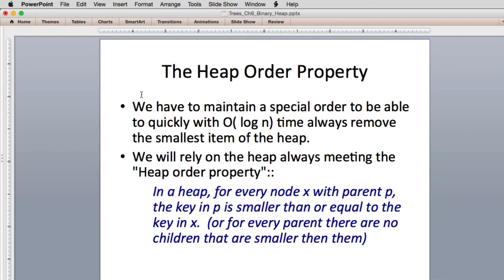To maintain the order in the list so that we can implement a priority queue, we have to have a special rule that determines where things go in the list. When we insert someone in a priority queue, we have to find the right place in line to put them. We want a relationship in our three-dimensional binary heap structure that's going to put them in a place that it's easy to implement priority queue. This particular property is called the heap order property. We have to maintain a special order to be able to quickly, in log n time, always remove the smallest item from the list.